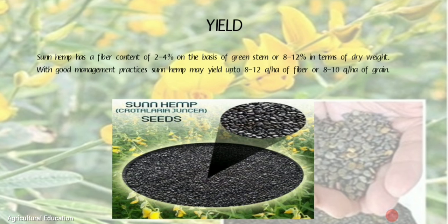Yield: Sunhemp has a fiber content of 2–4% on the basis of green stem, or 8–12% in terms of dry weight, with good management practices. Sunhemp may yield up to 8–12 quintals per hectare of fiber, or 8–10 quintals per hectare of grain.